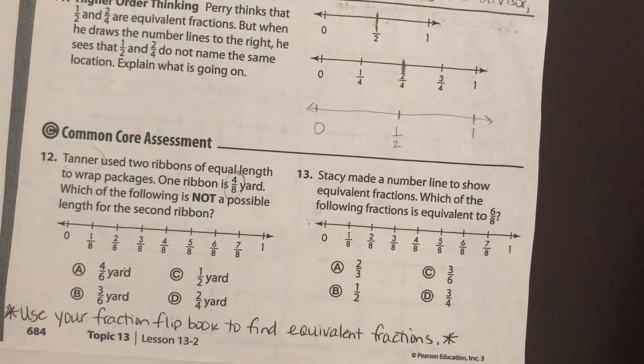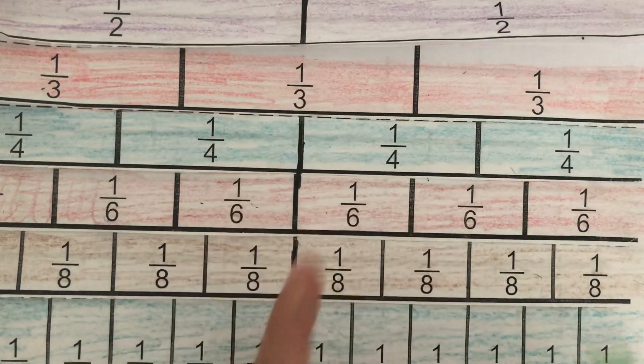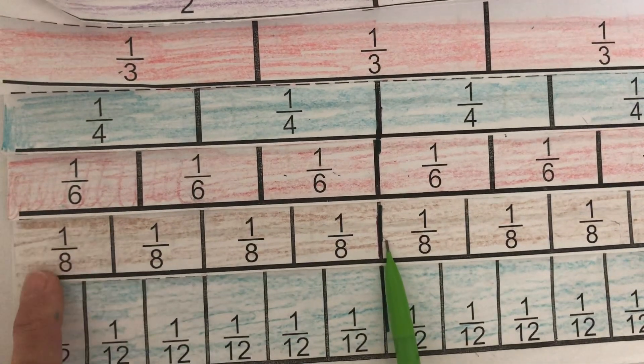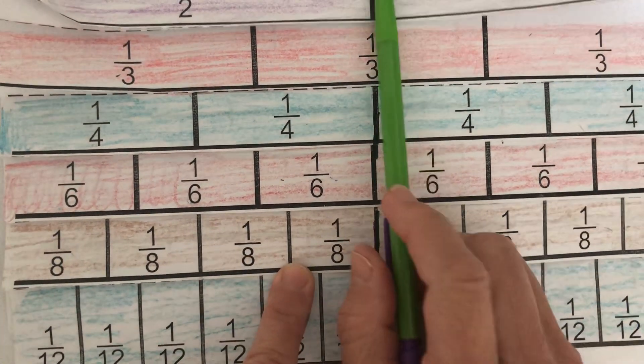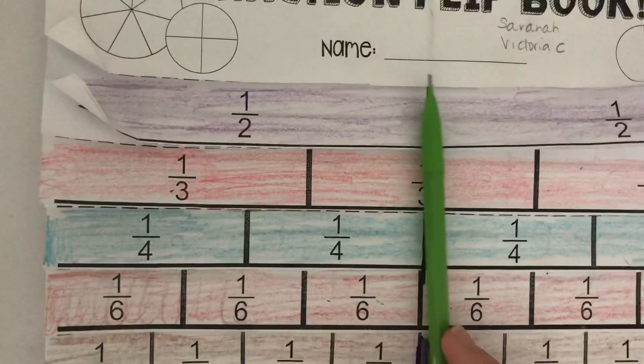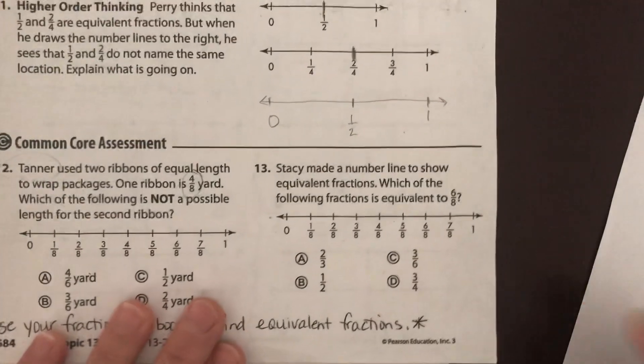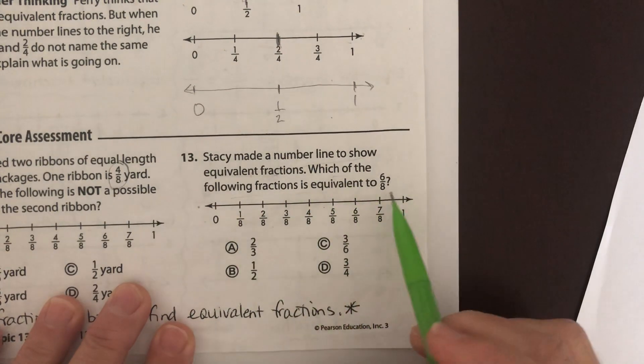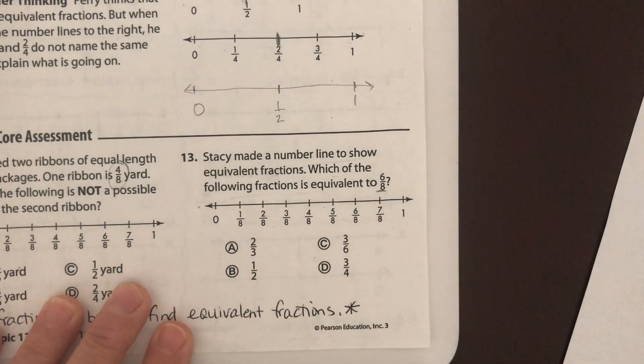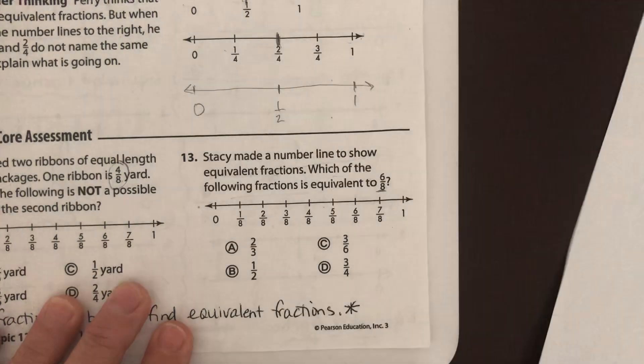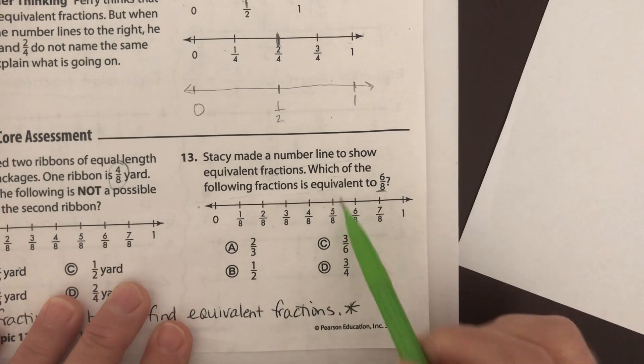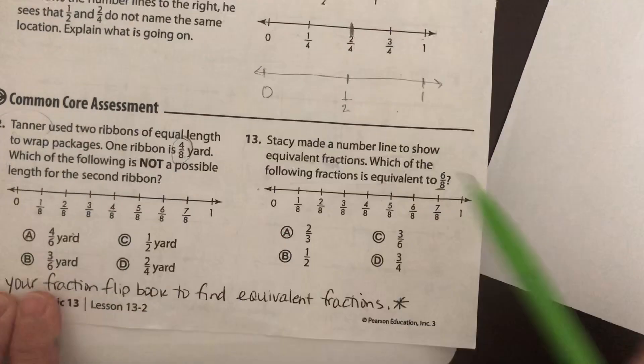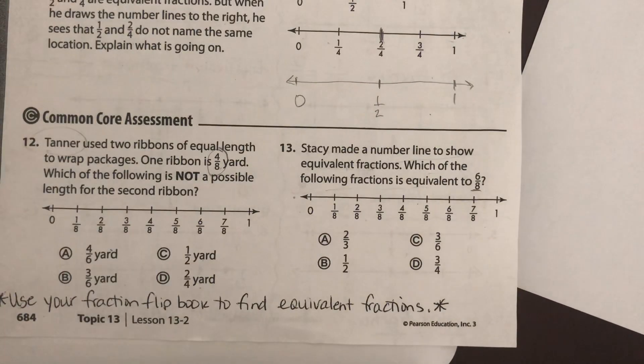So you could also look at your fraction flip book. I did one half compared to 4 eighths. One, two, three, four compared to one half and those are equivalent. Okay, so you can do the same thing to the other three and find the one that's not equivalent and then number 13, Stacy made a number line to show equivalent fractions. Which of the following fractions is equivalent to 6 eighths? You're going to do the same thing. You can use your multiplication division. You can use your fraction flip book, but which one is equivalent? So here you're looking for the one that's not equivalent. Here you're looking for the one that is. Okay, good job.